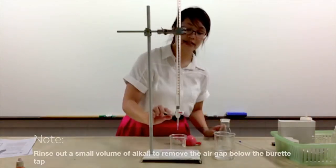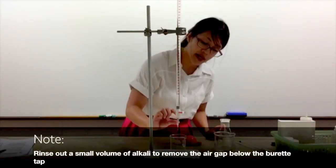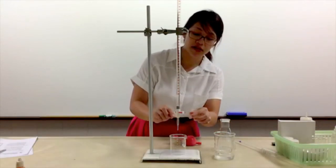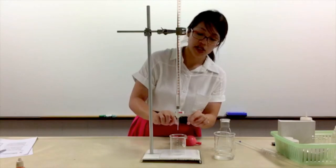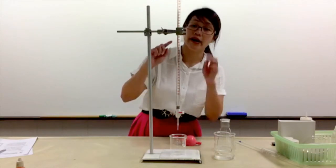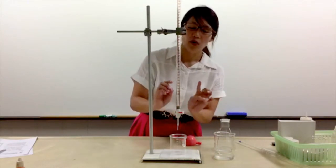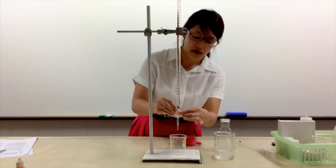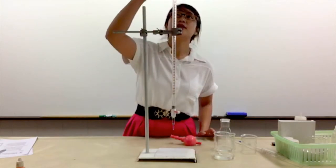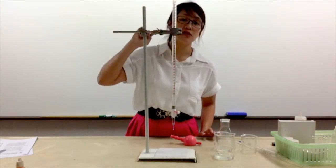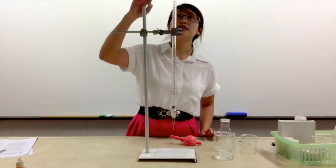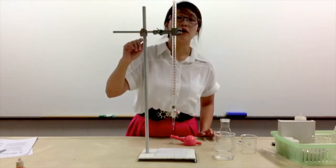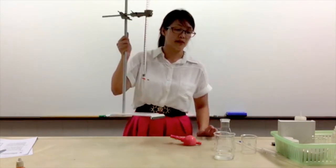Now you would realize that there is an air gap below, so you would need to rinse out the liquid such that it will be more accurate. What you can do is turn the burette tap slowly. Check that your burette level is at the zero cm³. If you realize that it is not at zero cm³, you will need to fill in more alkaline so that it goes all the way back to zero cm³.